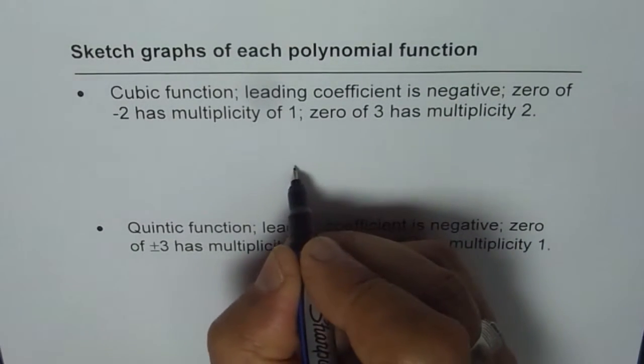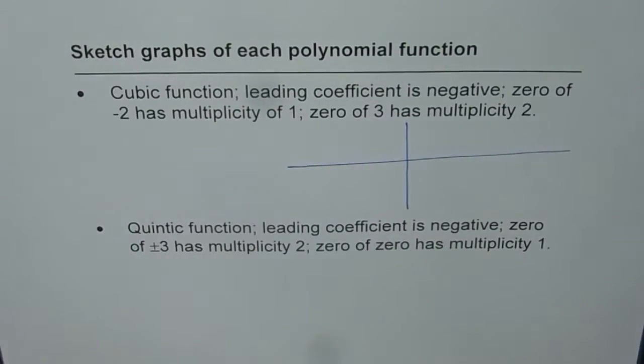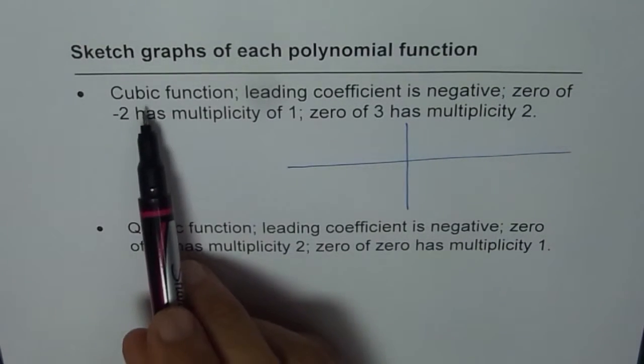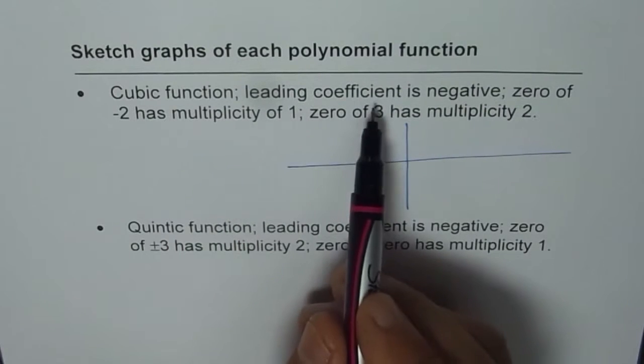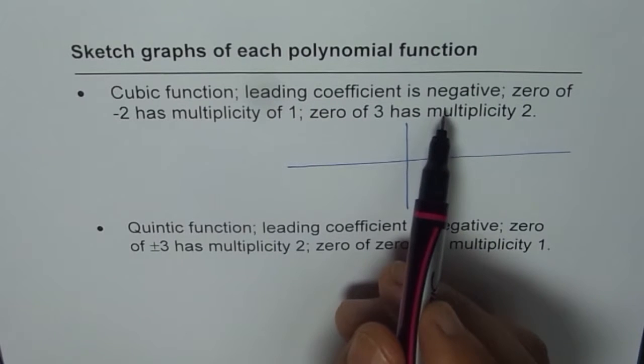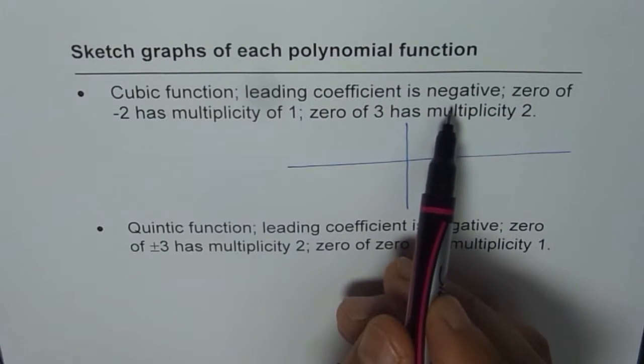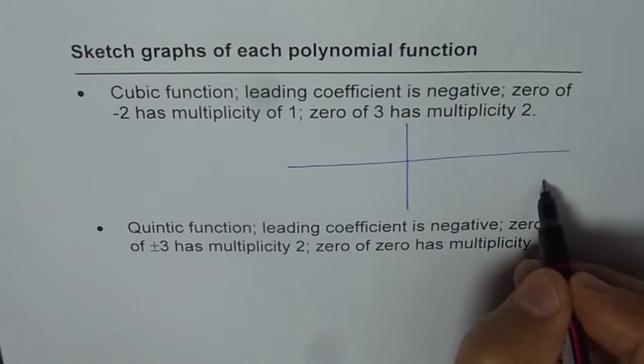To sketch, let's begin by drawing x and y-axis. There is less space, so I am just squeezing in the solution. First thing is a cubic function, leading coefficient is negative. When we say leading coefficient is negative, what kind of end behavior do we expect? Negative means right side down.